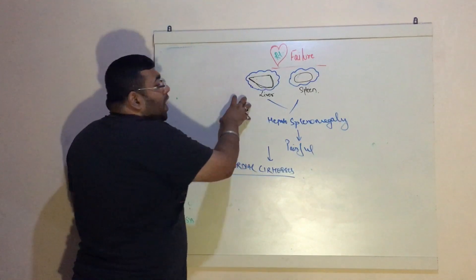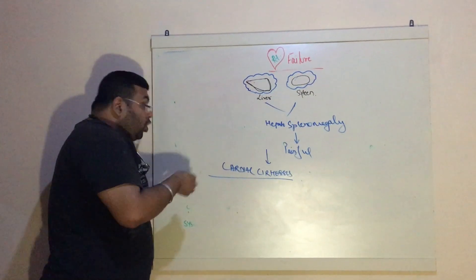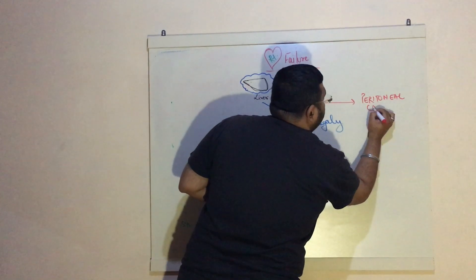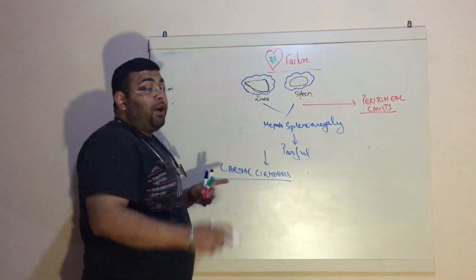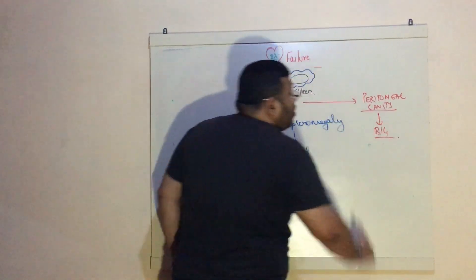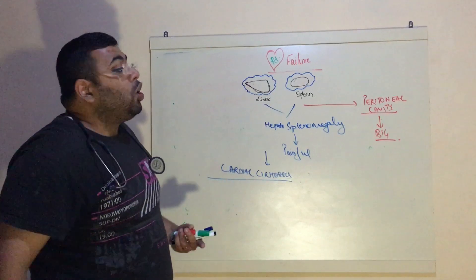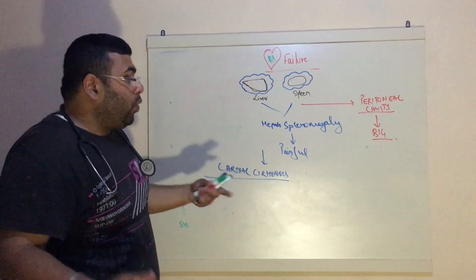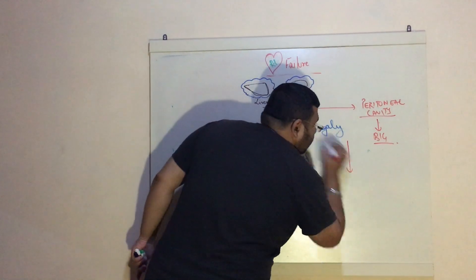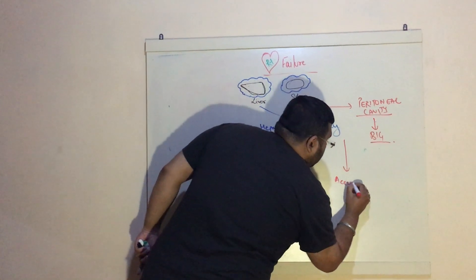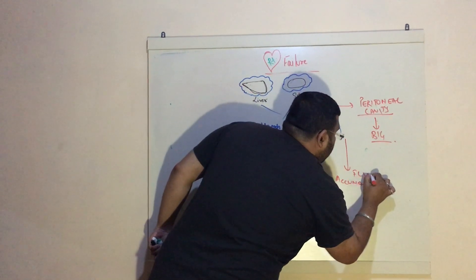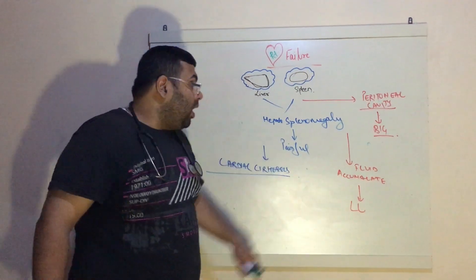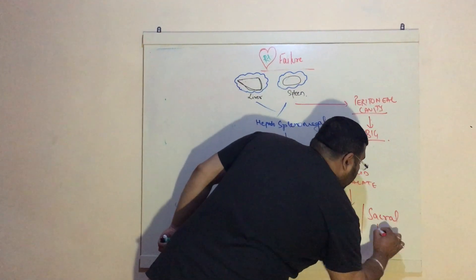The fluid is not only accumulated in the liver and spleen — it is also accumulated in our large peritoneal cavity. Because the peritoneal cavity is big, the fluid continues to build up pressure there, and because it is big, we do not realize it until it is fully filled with fluid.